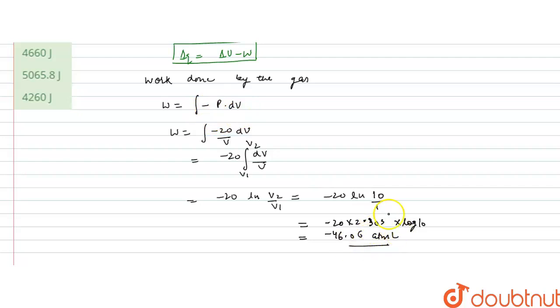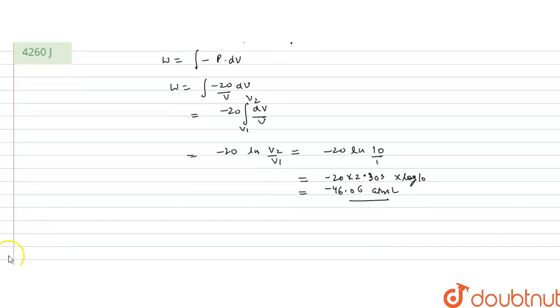1 litre atmosphere to convert this into joules, we will convert this into joules, because the internal energy is given in joules, so their units should be same. So, 1 litre atmosphere, that is equal to 101.325 joules.